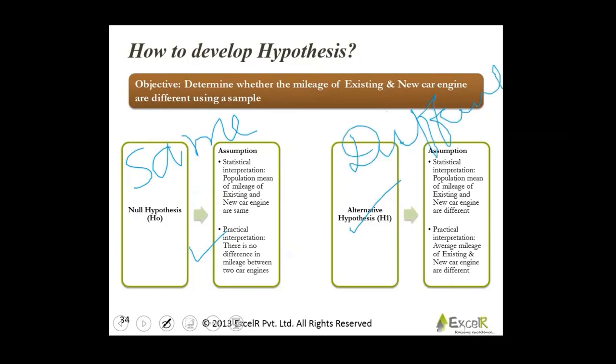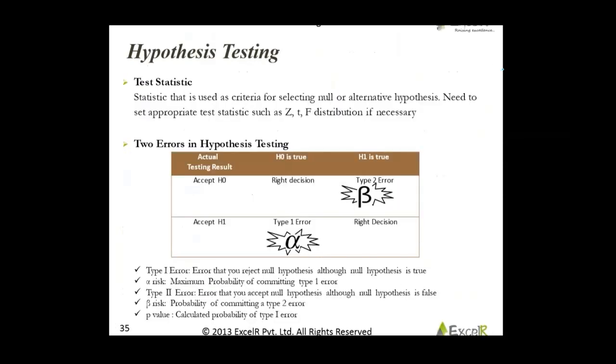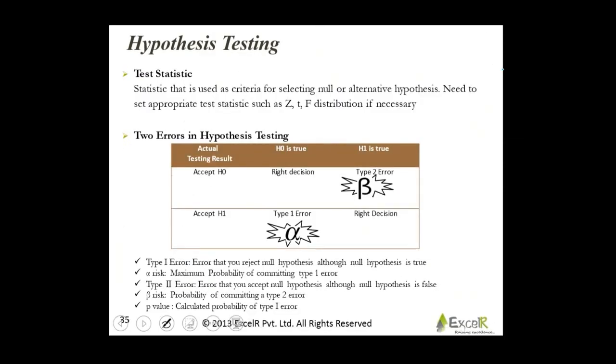Do not worry, things would become extremely clear as we move on. Here is hypothesis testing. You use some kind of test statistic. Statistic that is used as criteria for selecting null and alternate hypothesis. You might end up using Z-test or T-test or F-distribution depending on the context, depending on the data which is provided to you. Two errors in hypothesis testing. This is extremely important.